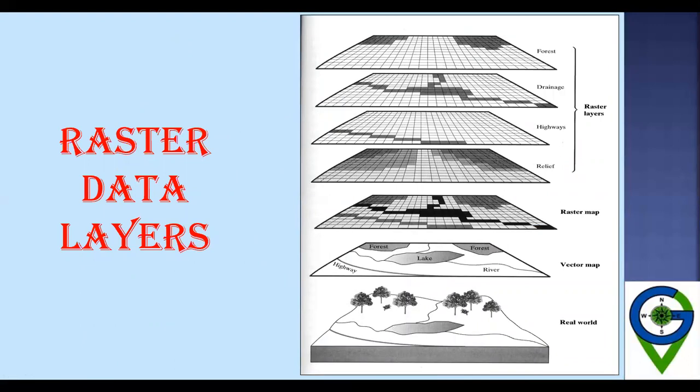There may be different raster layers, and these raster layers can be integrated to obtain information. Ultimately, a raster map can be converted into a vector map, and conversely, a vector map can be converted into a raster.